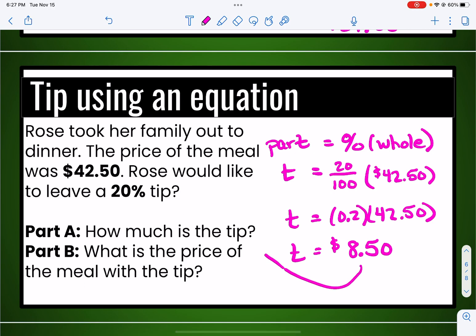Which is going to be the answer to part A, how much is the tip? And then part B would just be the exact same thing. I would take that $8.50 and add it back to the original price of the meal.